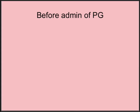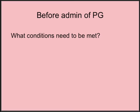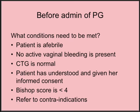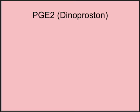Before administering prostaglandins, certain conditions must be met. The patient should be afebrile, because prostaglandins can slightly increase body temperature and you don't want to start with an existing infection. There should be no active vaginal bleeding, the CTG should be normal prior to commencement, informed consent must be given, and of course the Bishop Score should be less than 4, 5 or 6. There should be no contraindications.